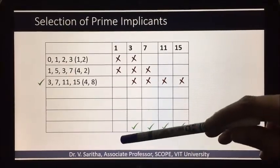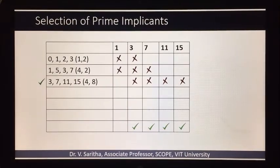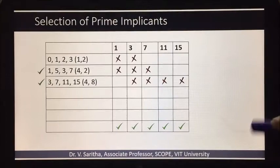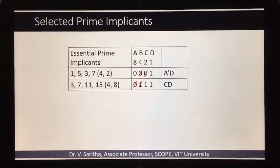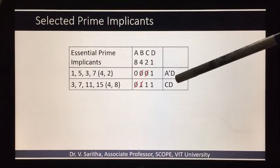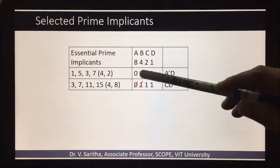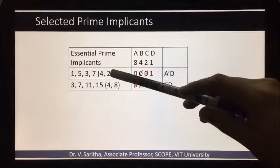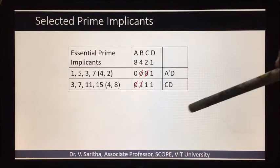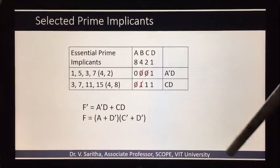Only one is left out, so to include it, either of these prime implicants needs to be included as an essential prime implicant. I am selecting the second one. Now to write the answer, the selected prime implicants are these two. We are writing ā·d and c·d — because a is zero and d is one, we are striking off two and four digits because the difference is 4,2 and 4,8 — so we get ā·d and c·d.